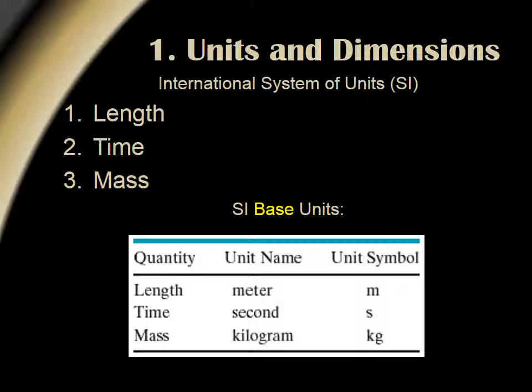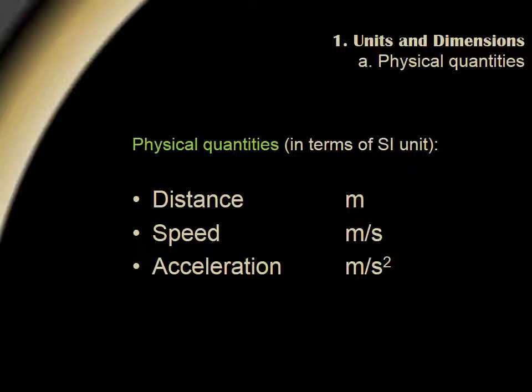As you know, scientists use the International System of Units, abbreviated SI, to express the measurements of physical quantities. The base units of the SI that we will be interested in for most part of the MCAT physics are listed below. Any physical quantity can be written in terms of the SI base unit. Here are some examples.